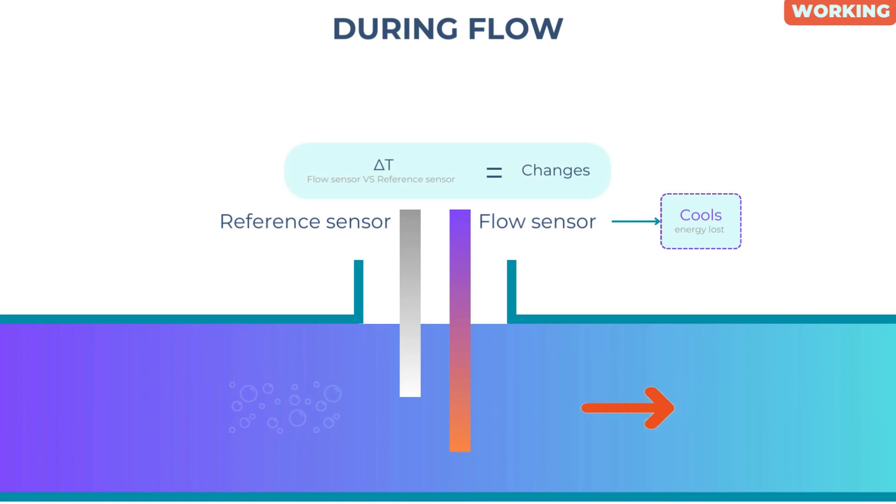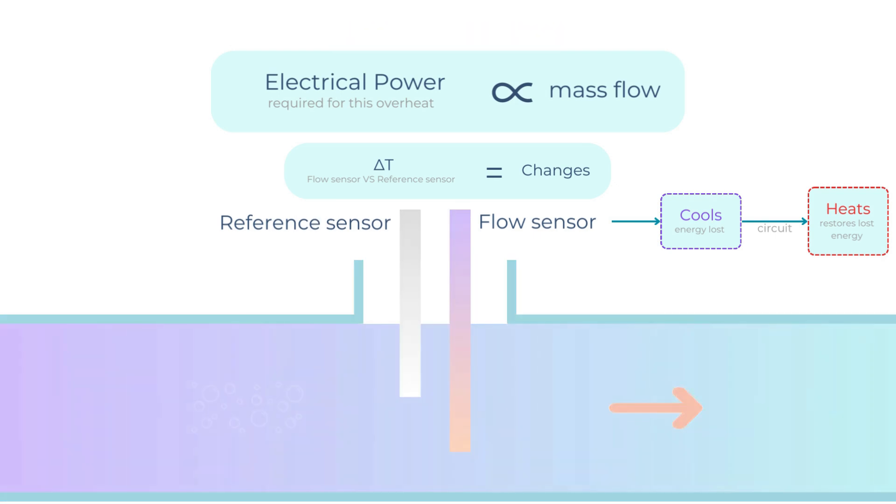The circuit restores the lost energy by heating the flow sensor to adjust the overheat temperature. The electrical power required to sustain this overheat denotes the mass flow signal.